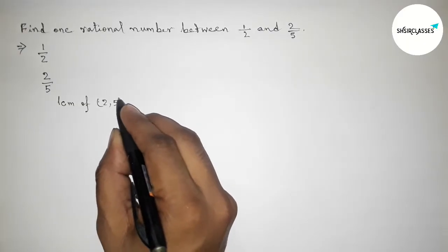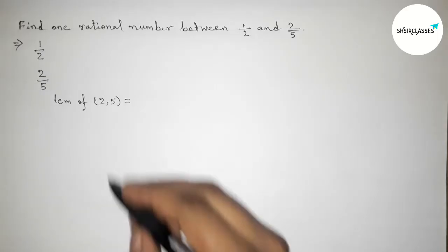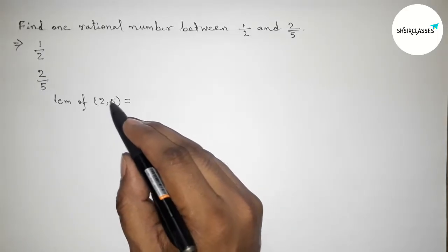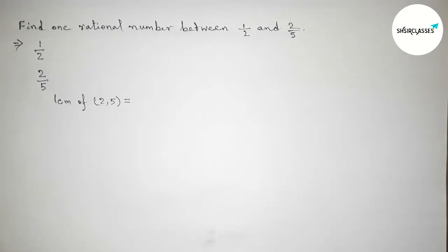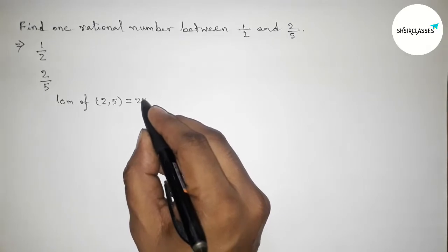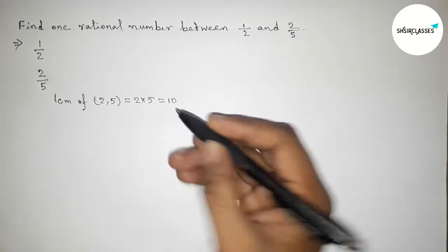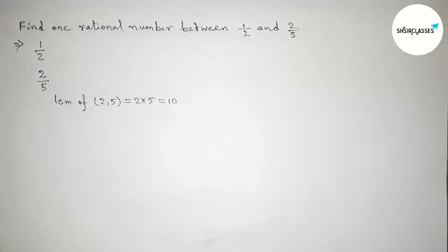Here we know that 2 and 5 are prime to each other, so their LCM will be the product of the numbers: 2 into 5. So this is 10. LCM of 2 comma 5 equals 10.